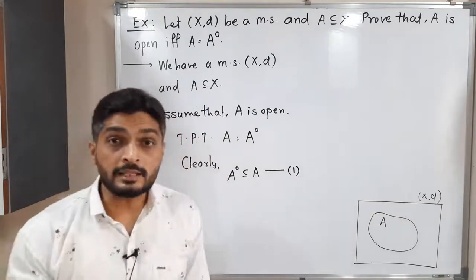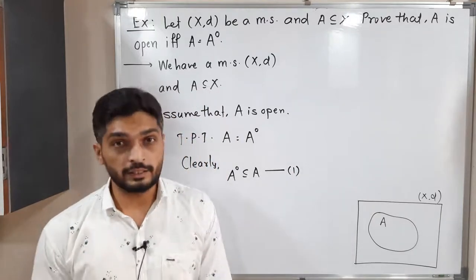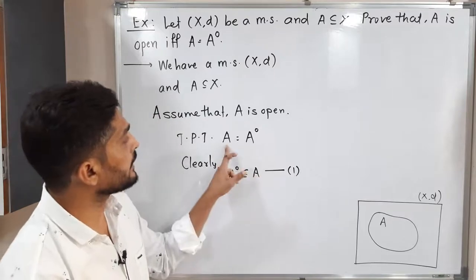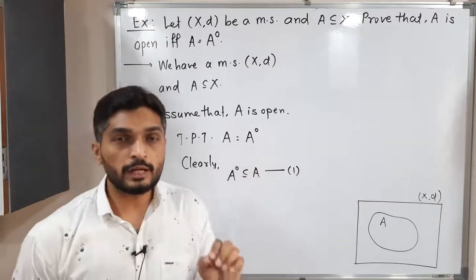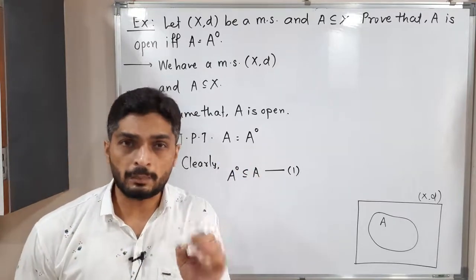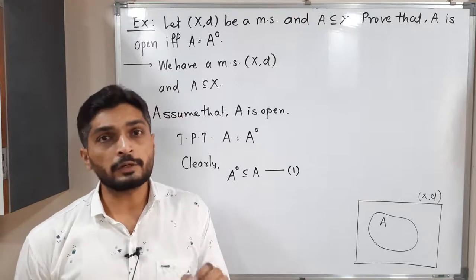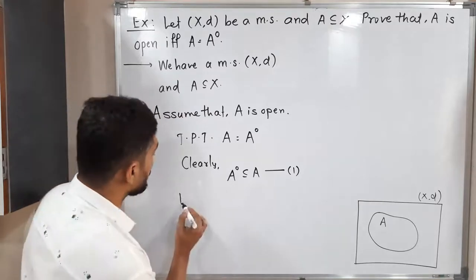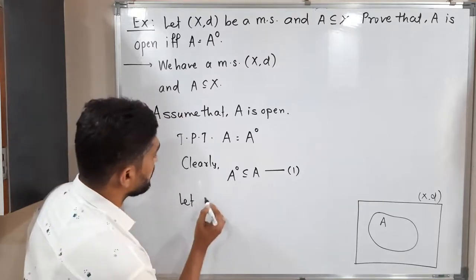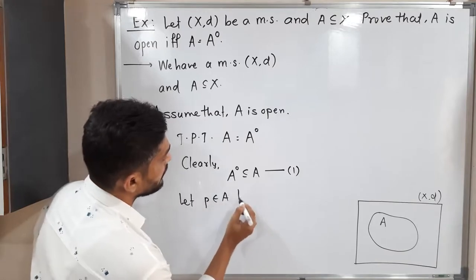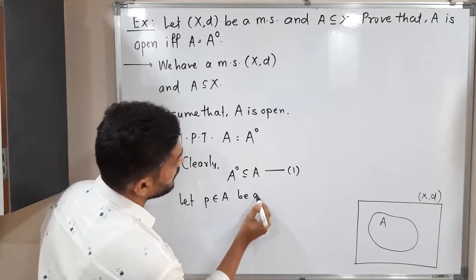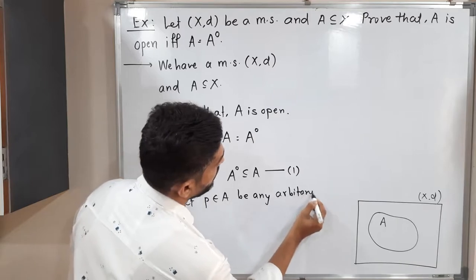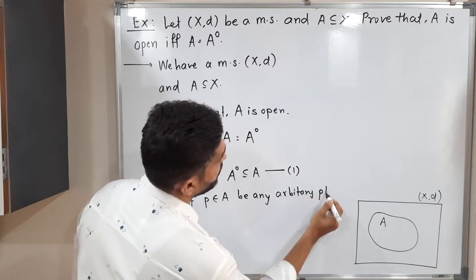Now we have to prove that A is a subset of A interior. To do this, we take any arbitrary point from A and try to prove it is in A interior. Let P belong to A be any arbitrary point.